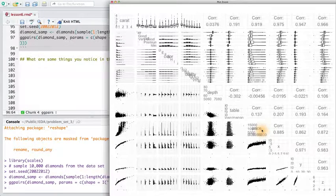We can see what might be relationships between price and clarity, and price and color, which we'll keep in mind for later when we start modeling our data. You might remember this when you created the box plots in problem set three.